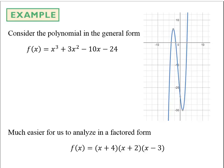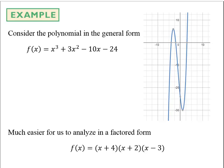Formally: if f is a polynomial function and r is a real number such that plugging r in gives a y-value of 0, then r is an x-intercept — and we call r a real zero of the function. Some textbooks call it a root. The zero r corresponds to a factor of x minus r in the factored form of the polynomial.